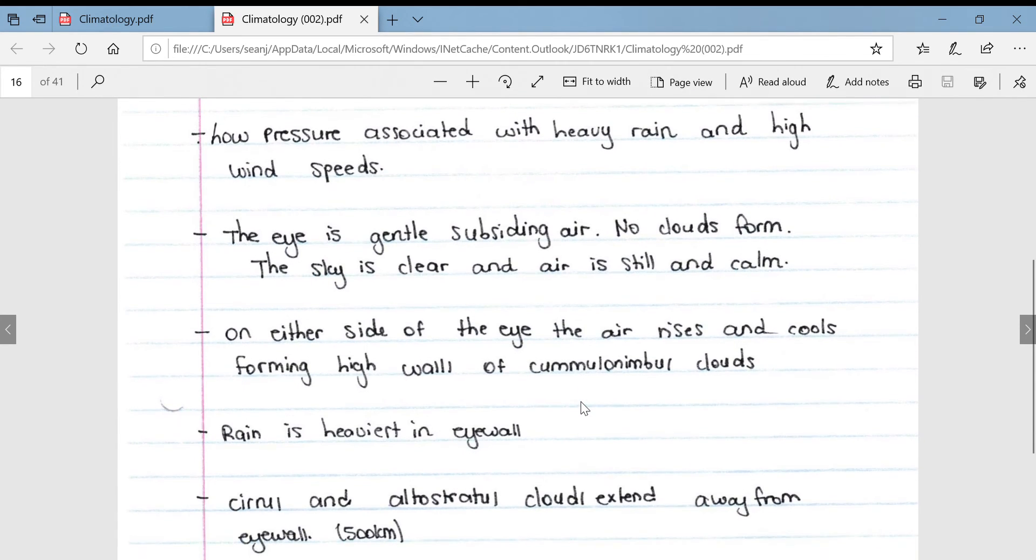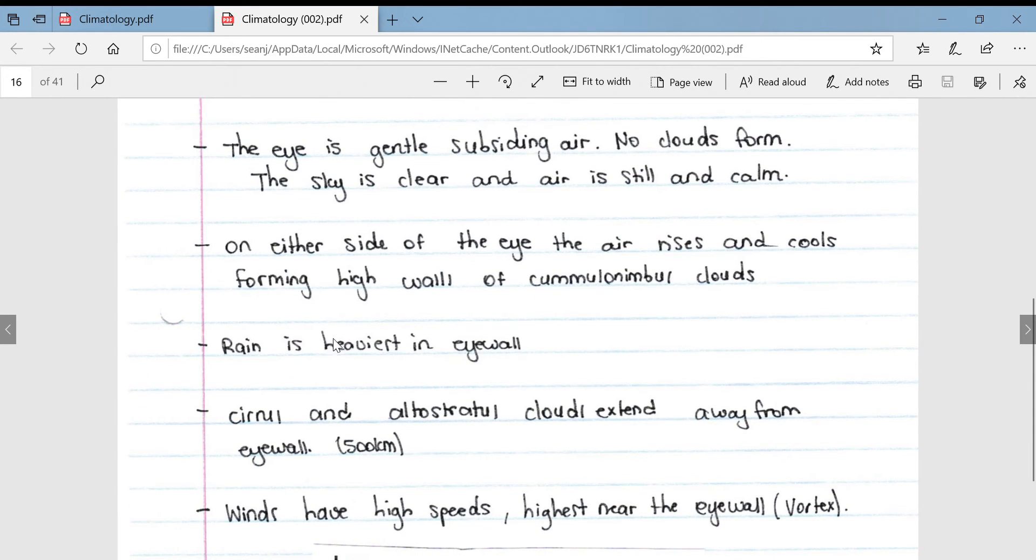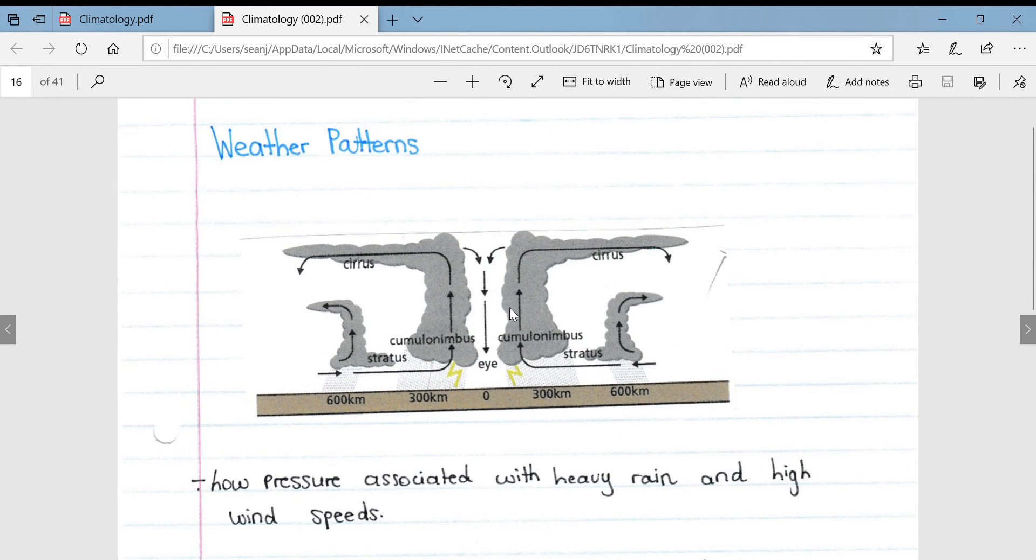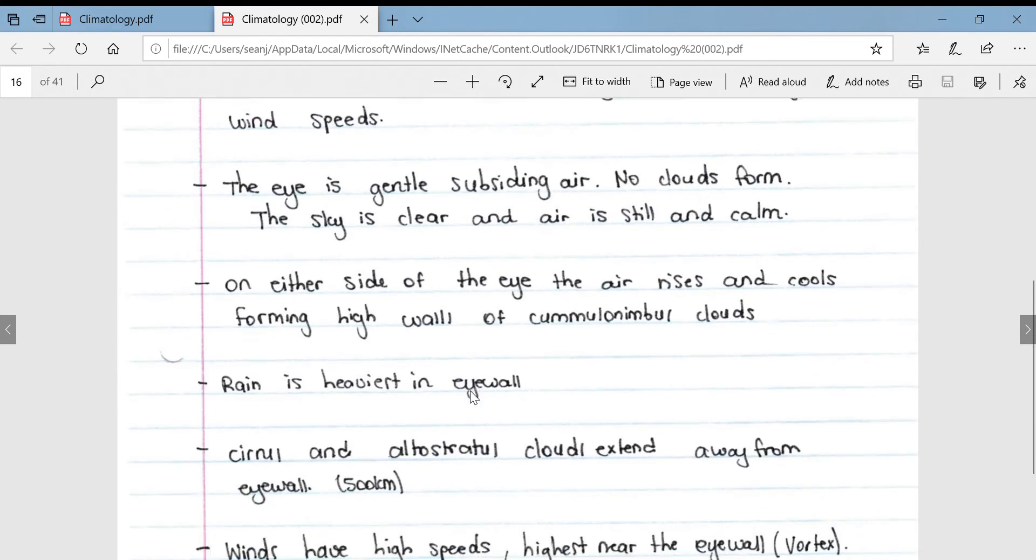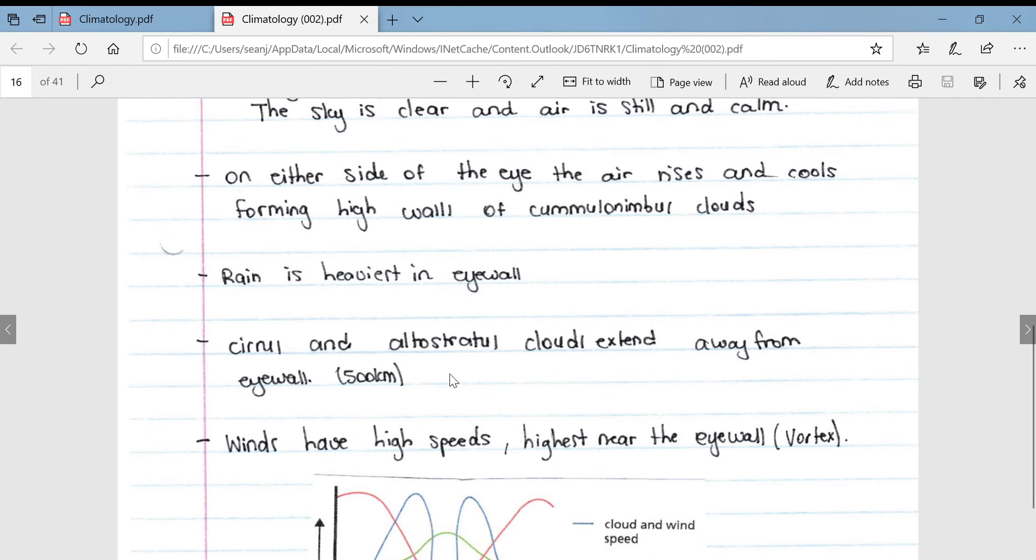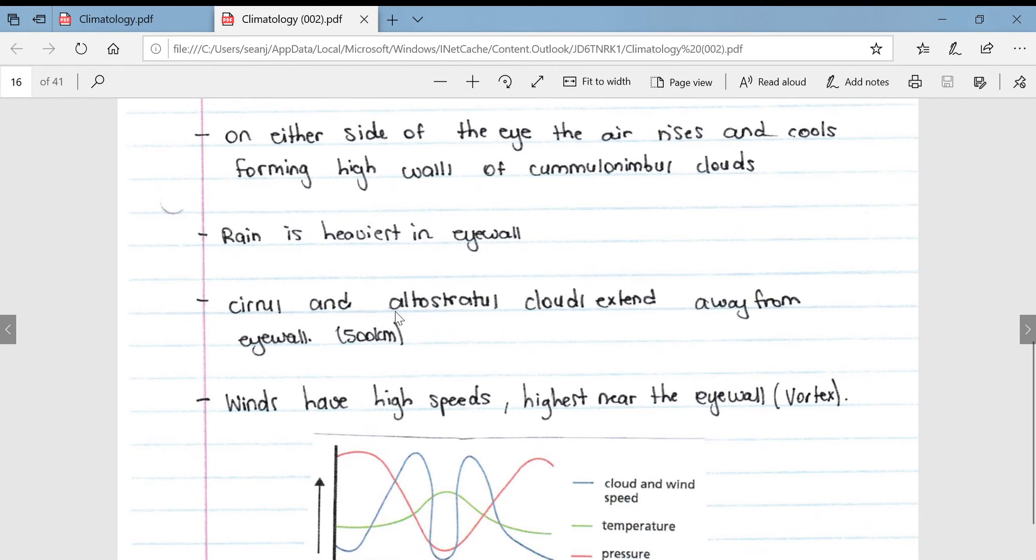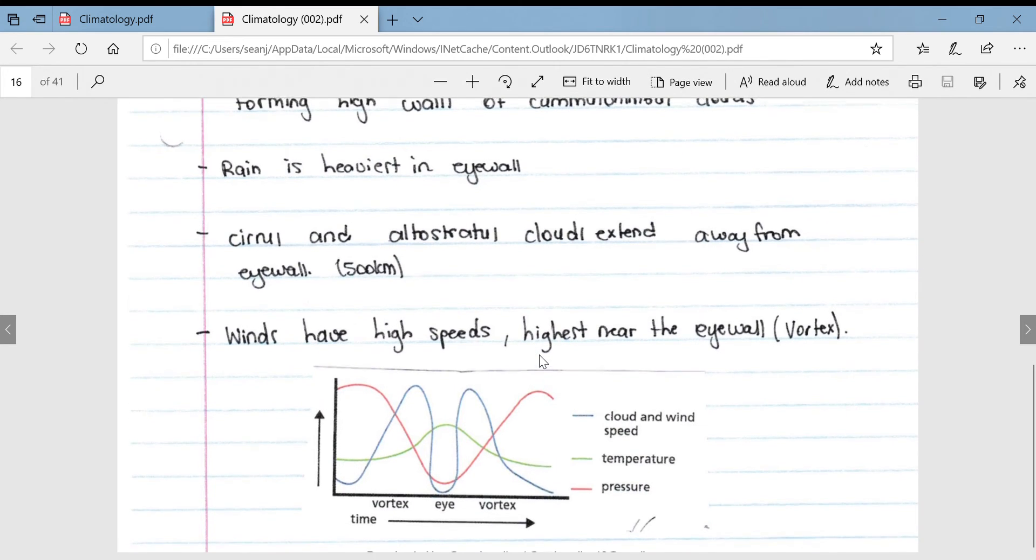On either side of the eye, the air rises and cools forming a high wall of cumulonimbus clouds. The rain is heaviest in the eye wall, obviously the eye wall being the edge of the eye, so the edge of these cumulonimbus clouds. Then cirrus and altostratus clouds extend away from the eye wall for plus minus 500 to 600 kilometers.